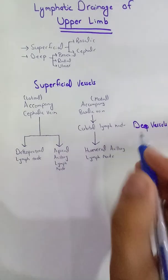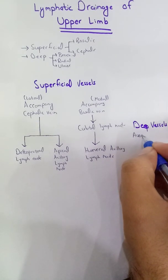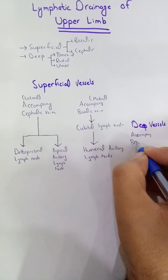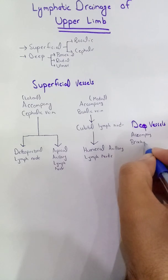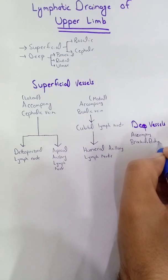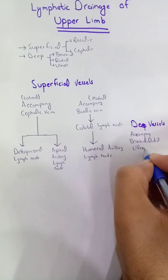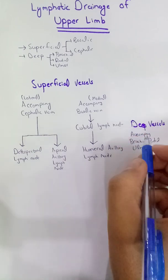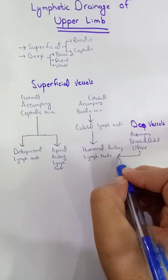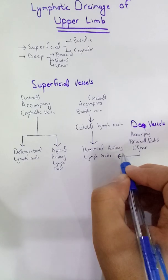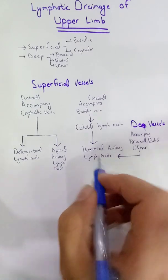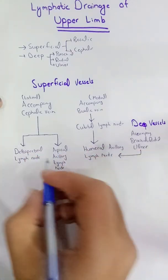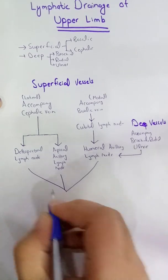The deep lymphatic vessels accompany the brachial vein, radial vein, or the ulnar vein. From all these vessels accompanying these deep veins, the lymph will ultimately drain into the humeral axillary lymph nodes.